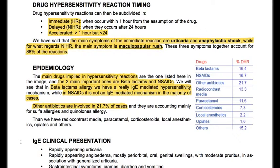Epidemiology: the main drugs implicated in hypersensitivity reactions are beta-lactams and NSAIDs, which are the two most important. In beta-lactam allergy we have a truly IgE-mediated hypersensitivity mechanism, while in NSAIDs it is not an IgE-mediated mechanism in the majority of cases. Other antibiotics are involved in 21.7% of cases, mainly sulfa allergies and quinolone allergy. Then we can have radiocontrast media, paracetamol, corticosteroids, local anesthetics, opiates, and others.